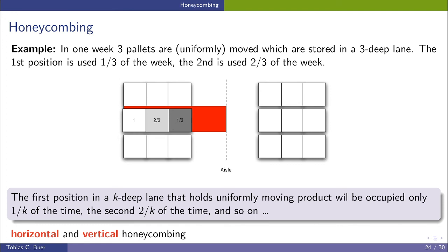So let's assume we consider one week. And during this one week we really need three pallets of this SKU. So we need everything that is stored in this lane. And the demand happens equally distributed, a uniform demand.